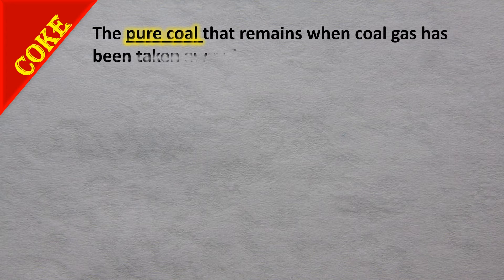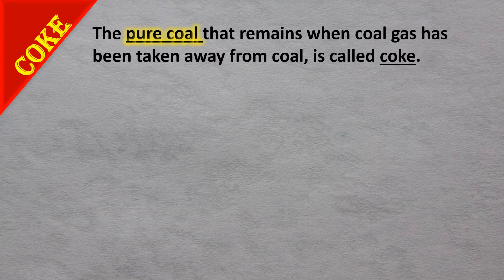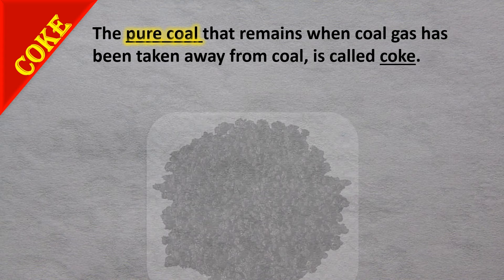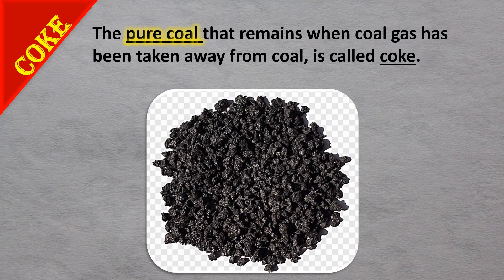The third amorphous form of carbon is coke. The pure coal that remains when we extract coal gas from coal is called coke. This is what it looks like.